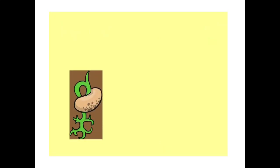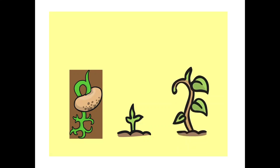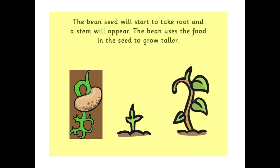Look at this picture. The sprout is emerging and roots are going deeper in the ground. In the second picture, the stem has appeared above the ground and is growing taller. The bean seed will start to take root and a stem will appear. The bean uses the food in the seed to grow taller.